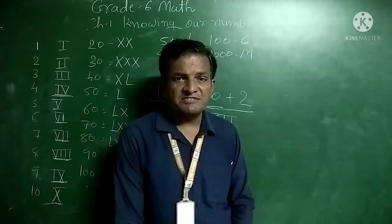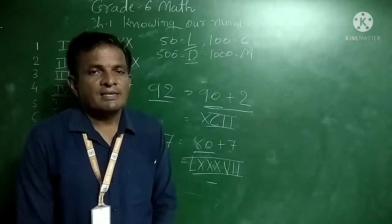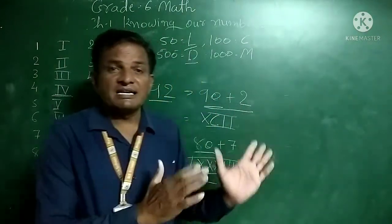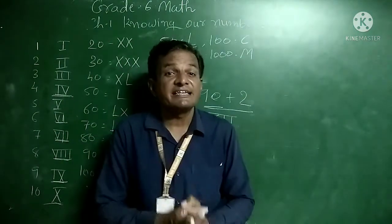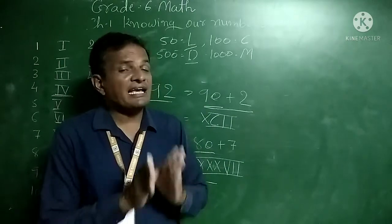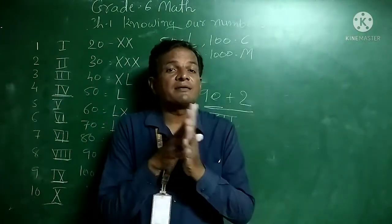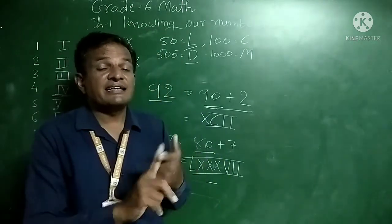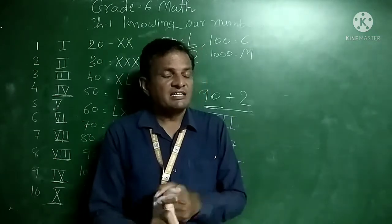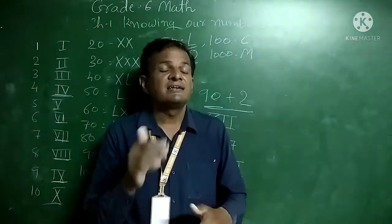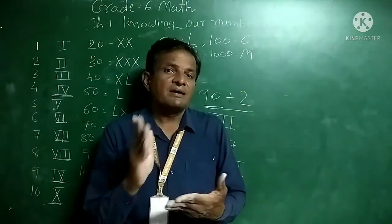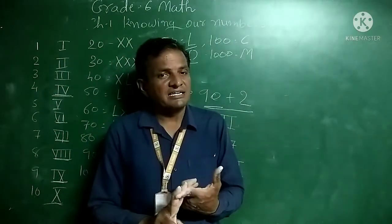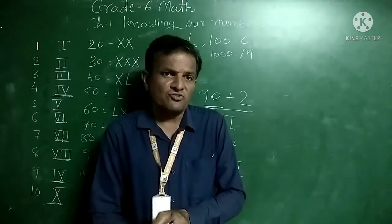I hope everyone observed this video properly and learned the topics in this chapter. In chapter one, we learned: the number system and how to find the greatest and smallest number from given numbers, ascending and descending order, making the greatest and smallest four-digit numbers from given digits, the Indian system and international system of numeration, converting units like meters to kilometers, centimeters to meters, kilograms to grams, and liters to milliliters, rounding numbers to the nearest ten, hundred, and thousand by the general rule, and finally Roman numerals.